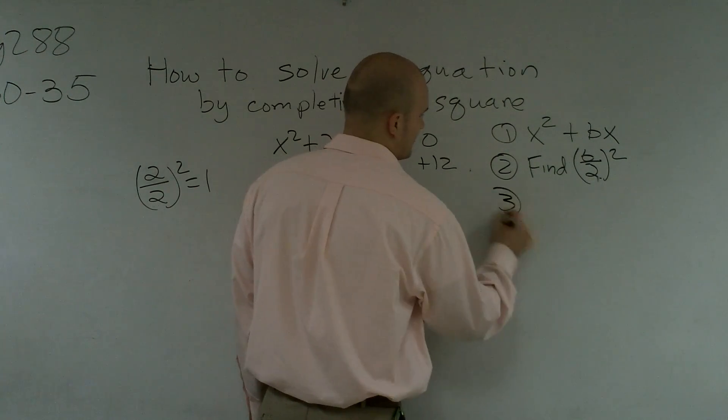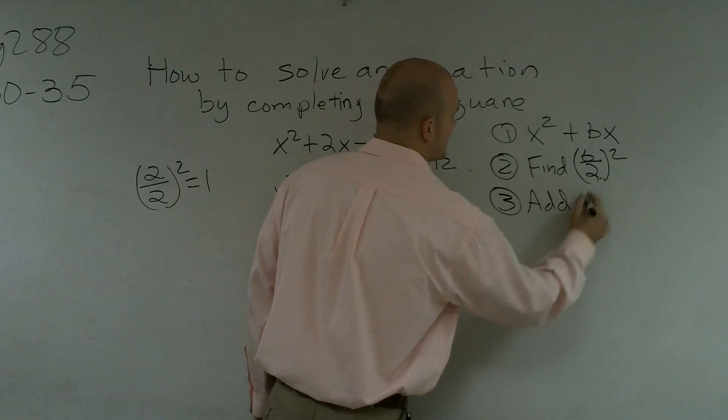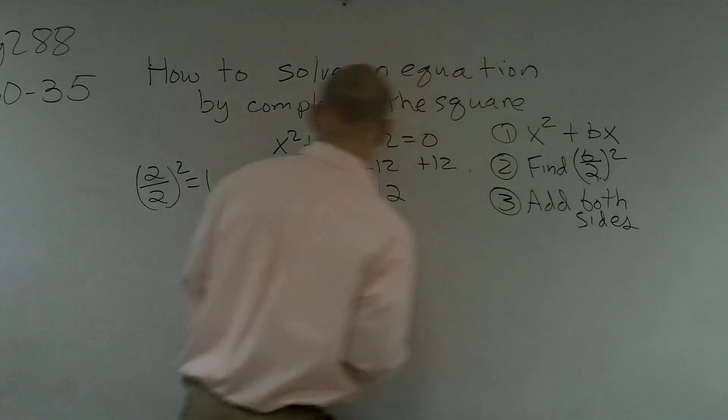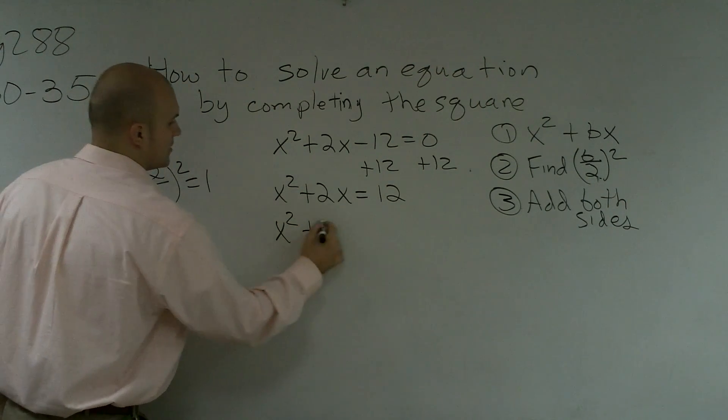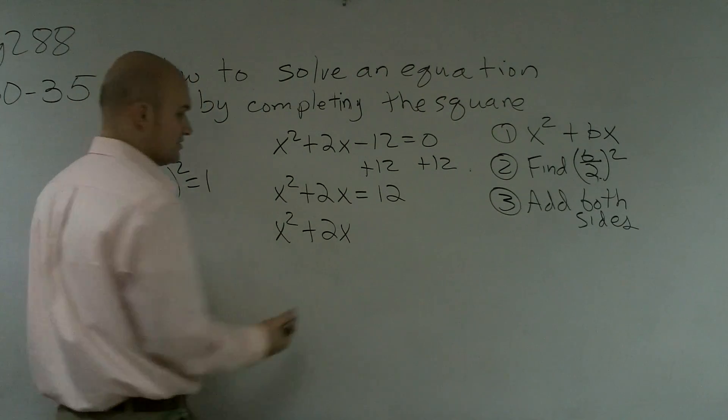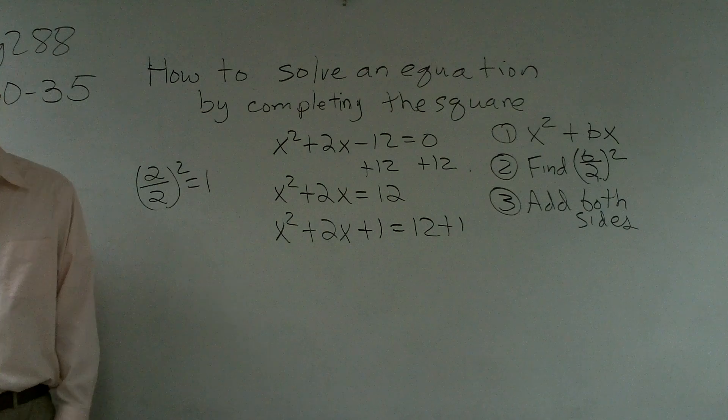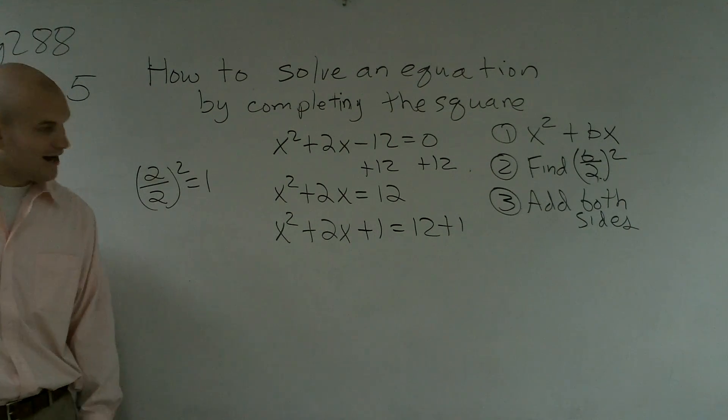Then step 3, add to both sides. So therefore, I just have x squared plus 2x, and since it's an equation, you have your addition property of equality, plus 1.